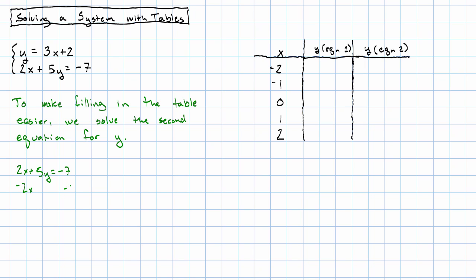Subtract 2x on both sides, 5y is negative 2x minus 7. Divide both sides by 5. Y is negative 2 fifths x minus 7 fifths.